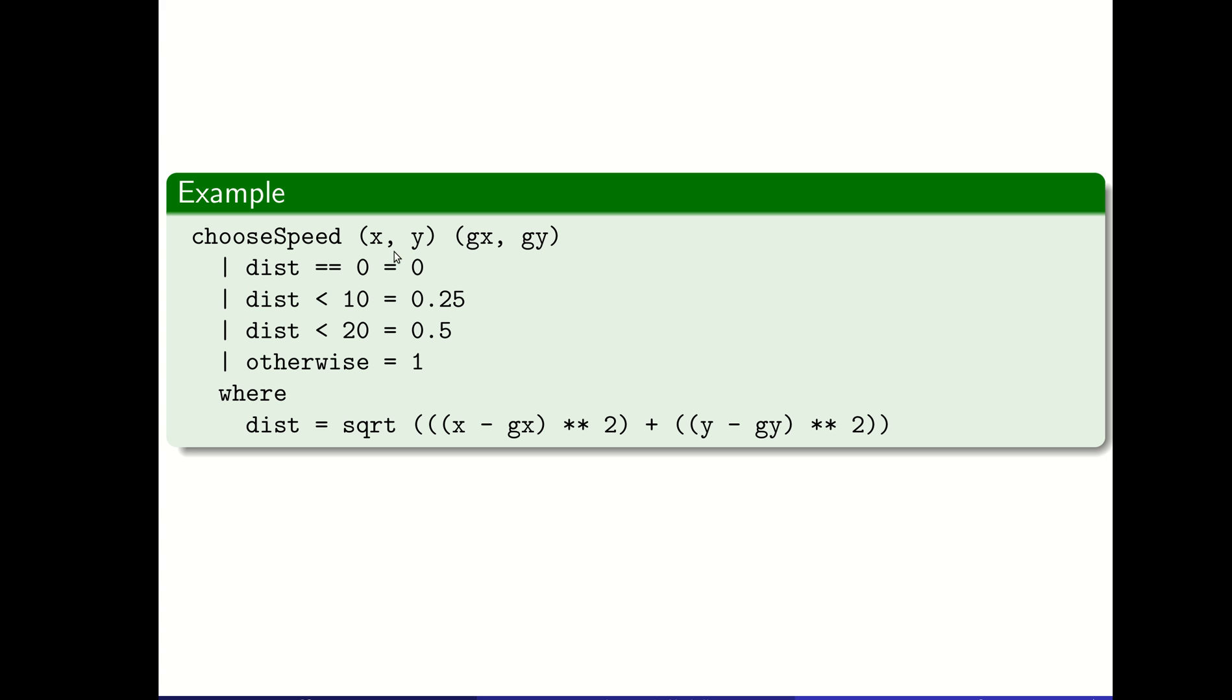If we're already there, our speed will be zero. If we're only 10 away, our speed will be 0.25. If we are 20 away, our speed will be 0.5. Otherwise, our speed is 1. The where statement allows us to use the parameters, just like a let statement could as well, from the function it's attached to. But because the where statement is attached to this function definition construct, we're able to define this distance across the multiple guards.